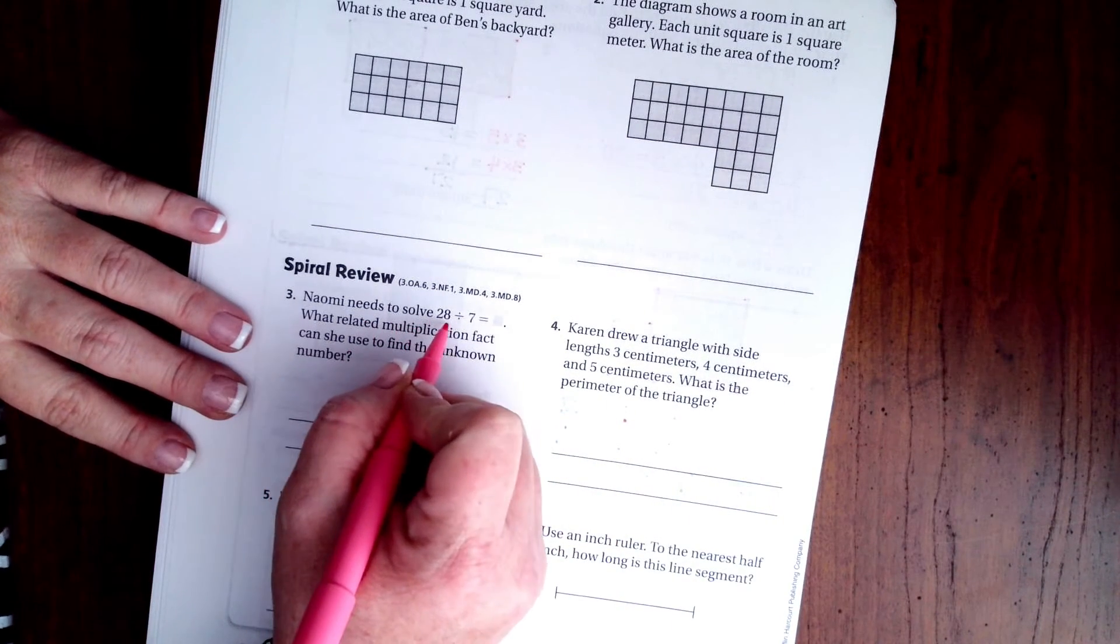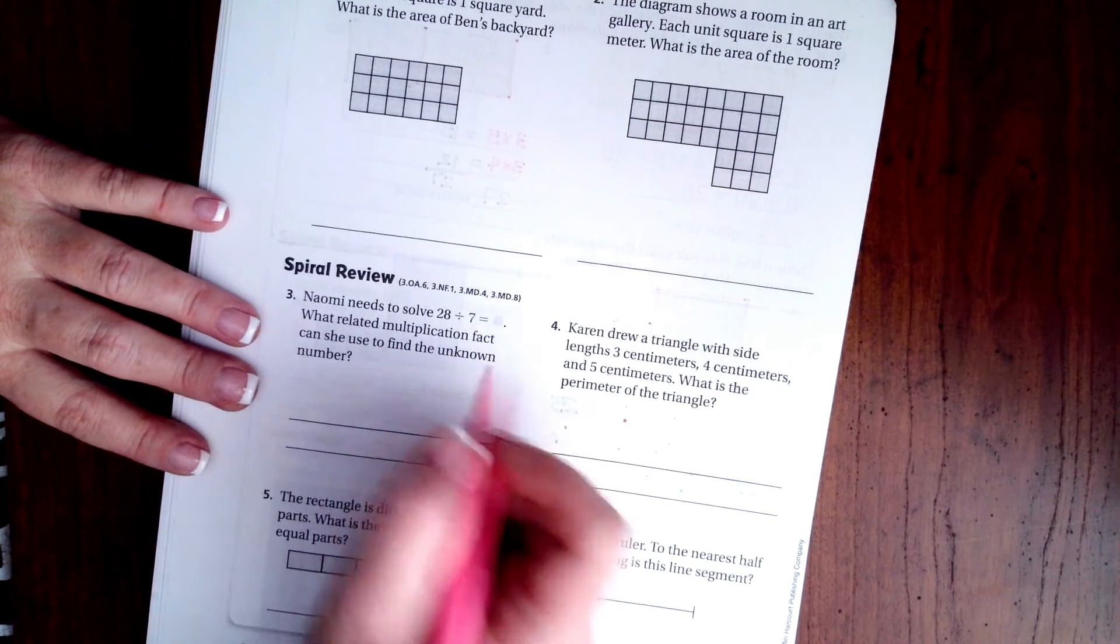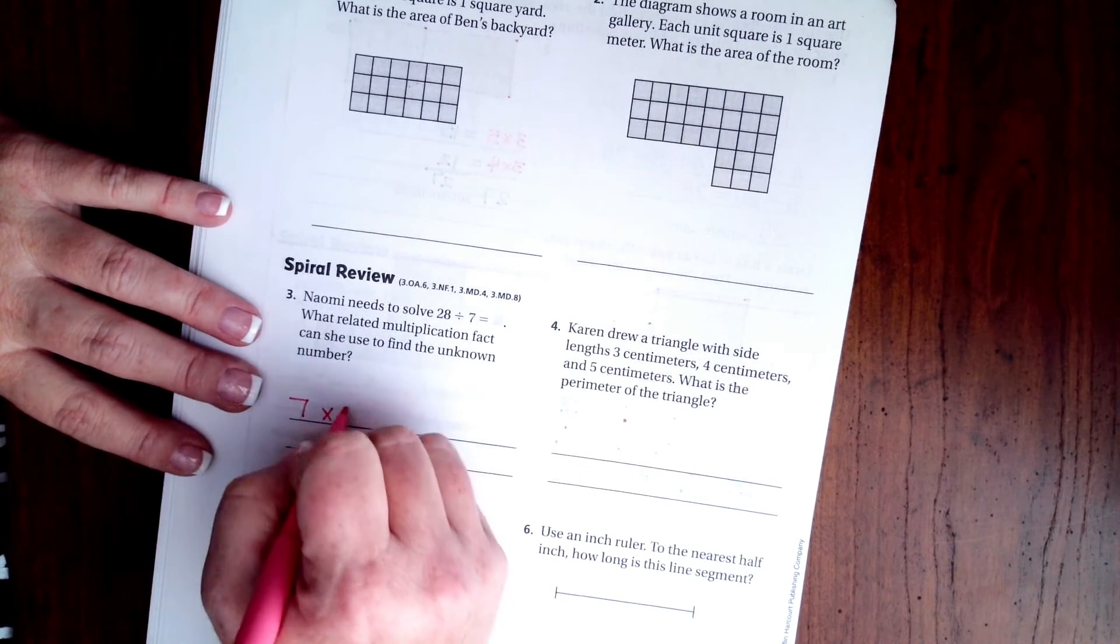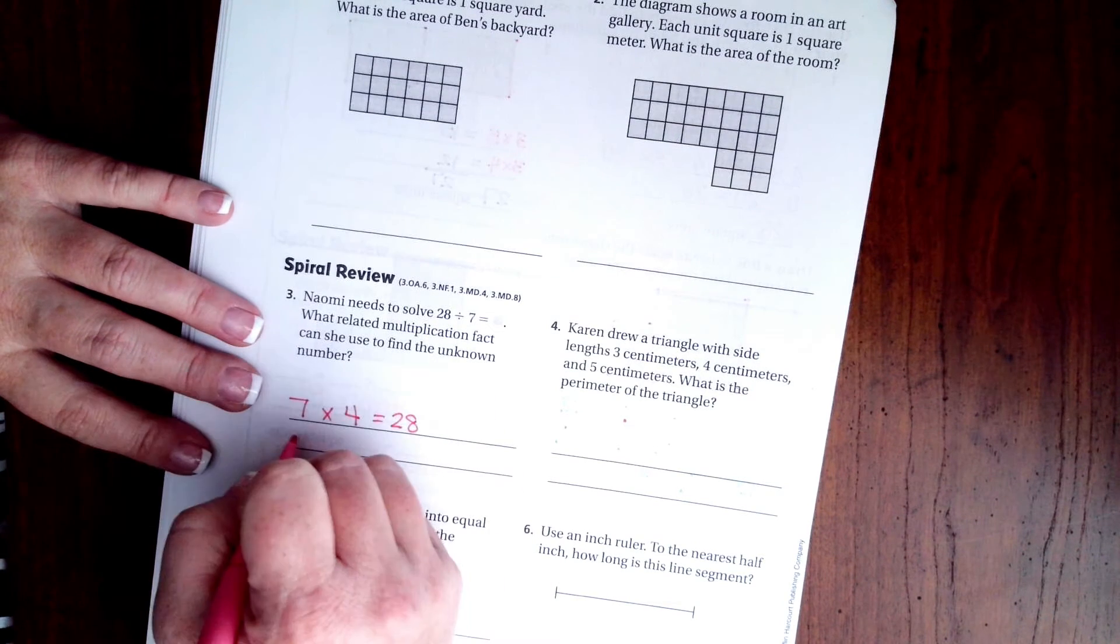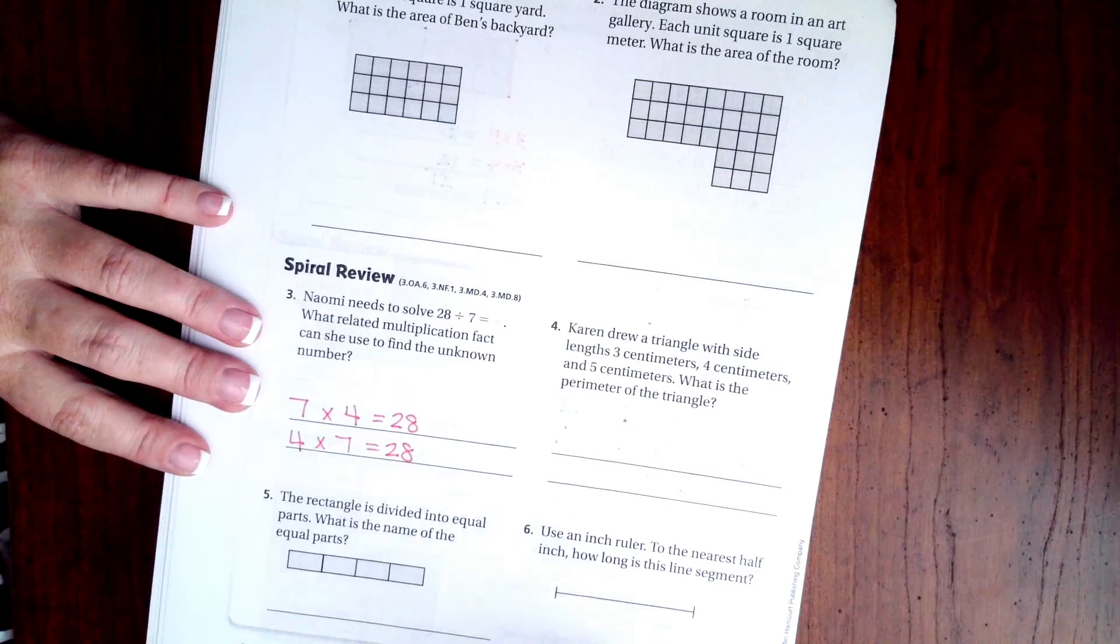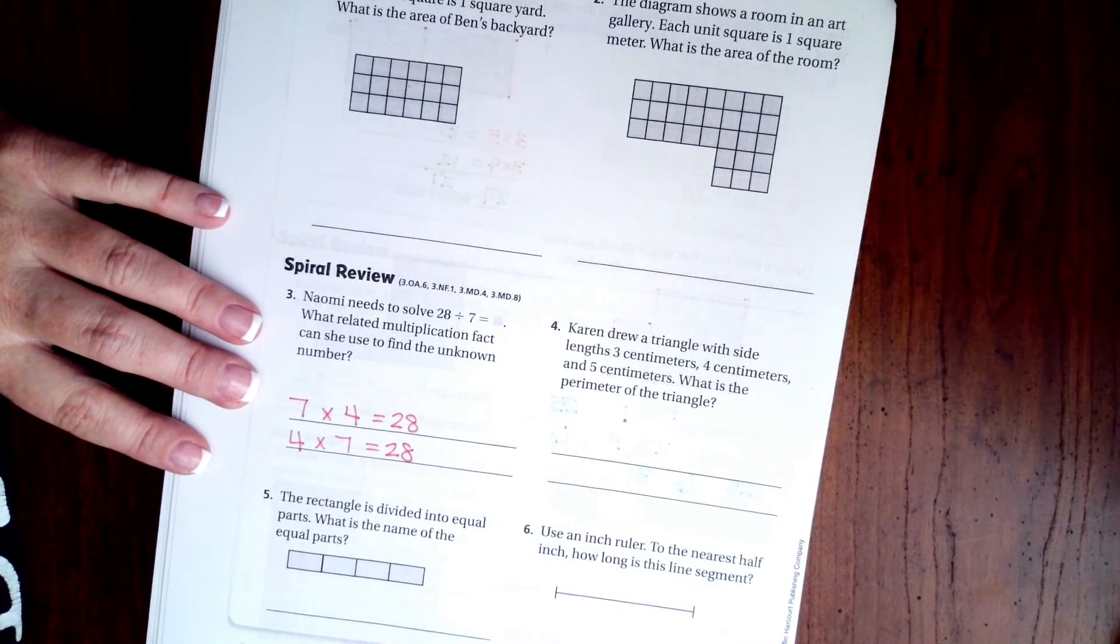Naomi needs to solve 28 divided by 7. What related multiplication fact can she use? Well, I know that 7 times 4 is 28, which is also true of 4 times 7. So you can use either of those. All right.